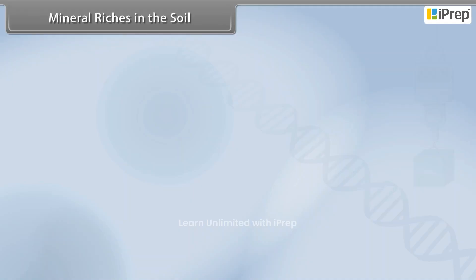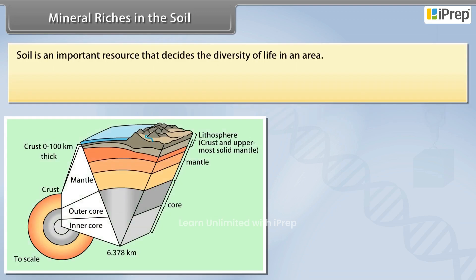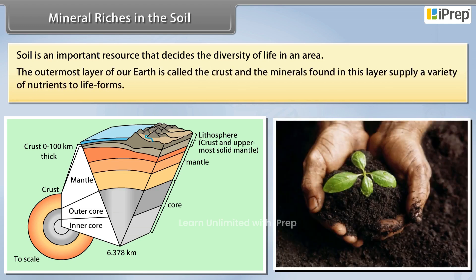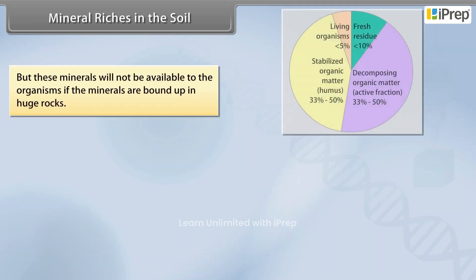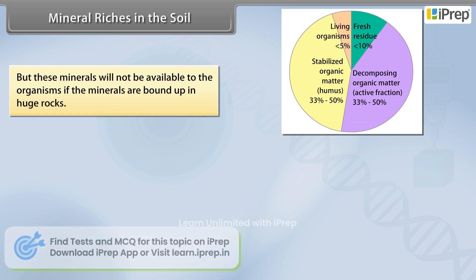Mineral riches in the soil: soil is an important resource that decides the diversity of life in an area. The outermost layer of our earth is called the crust, and the minerals found in this layer supply a variety of nutrients to life forms. However, these minerals will not be available to organisms if they are bound up in huge rocks.